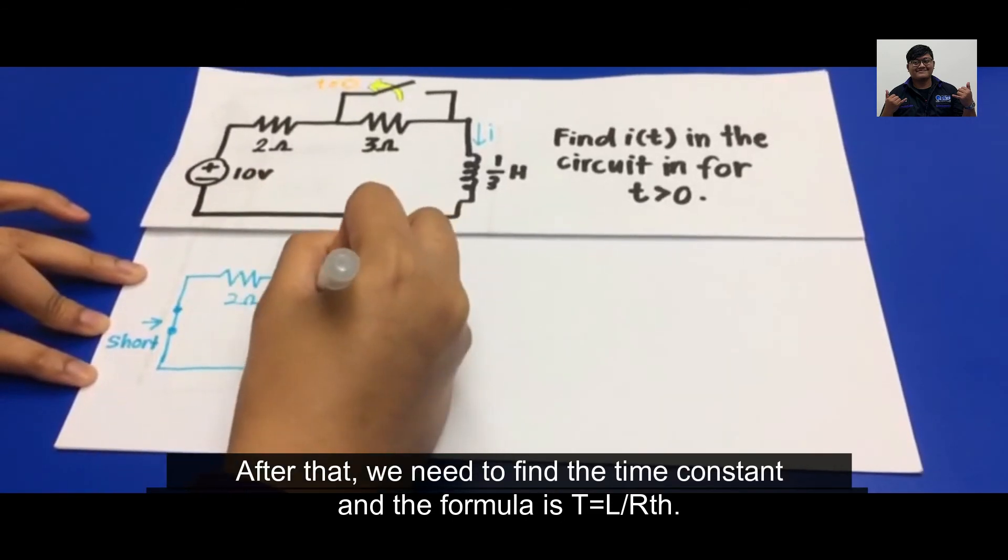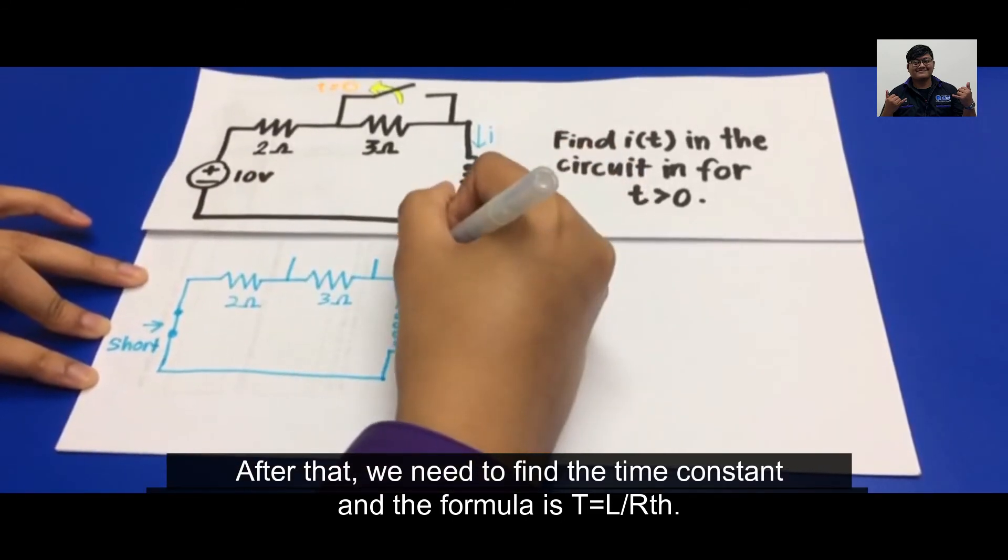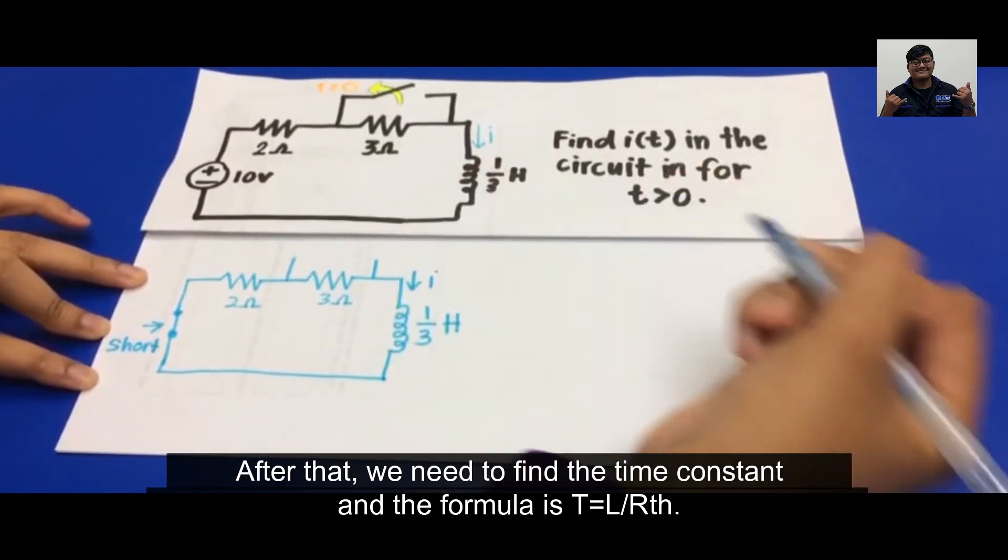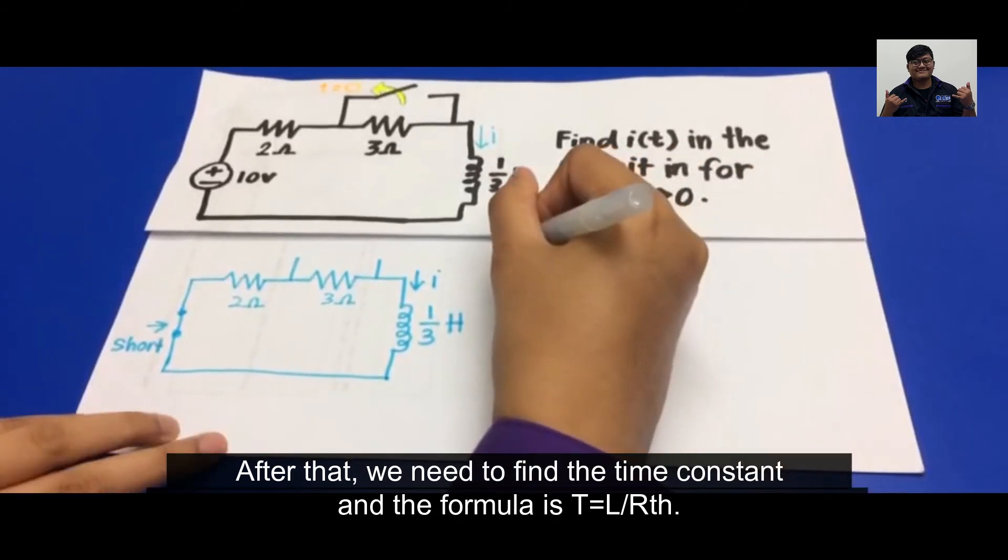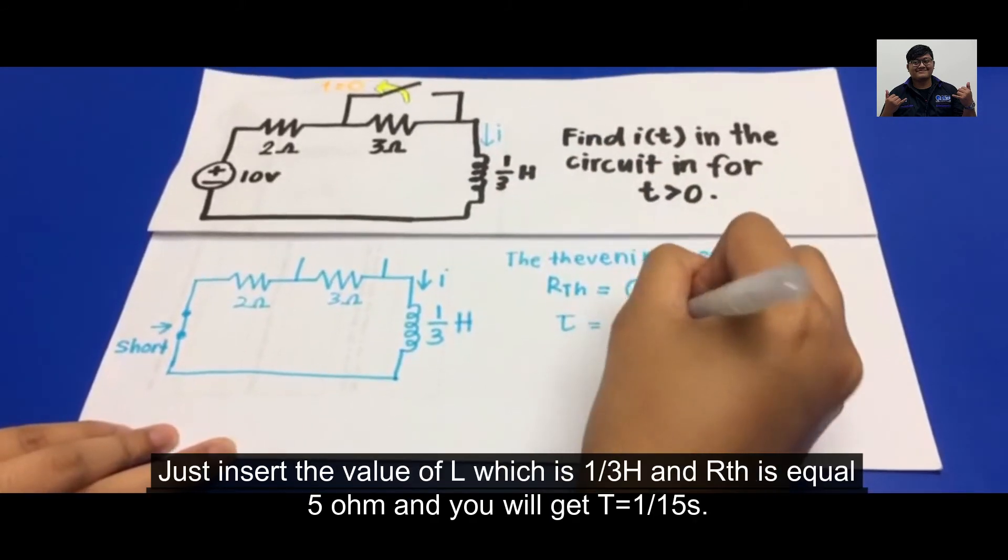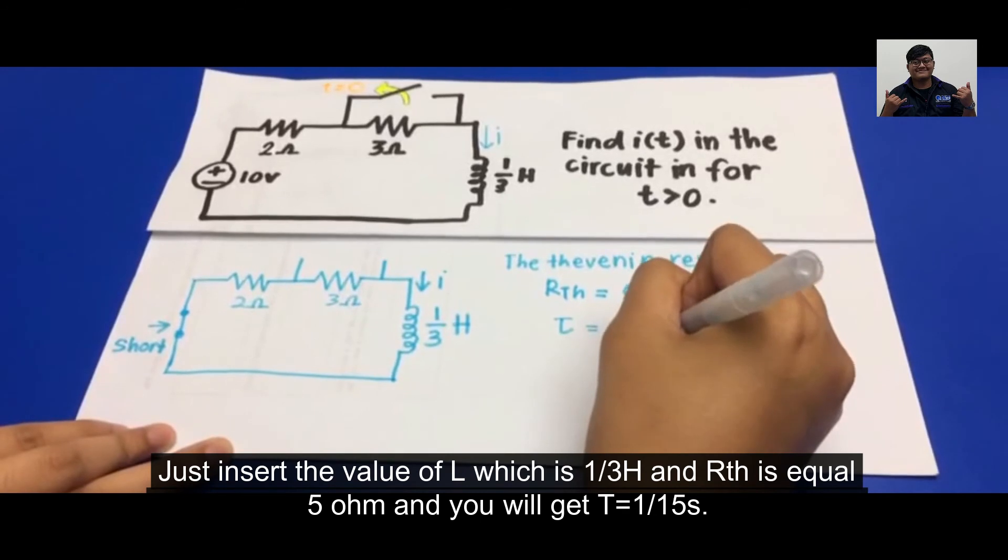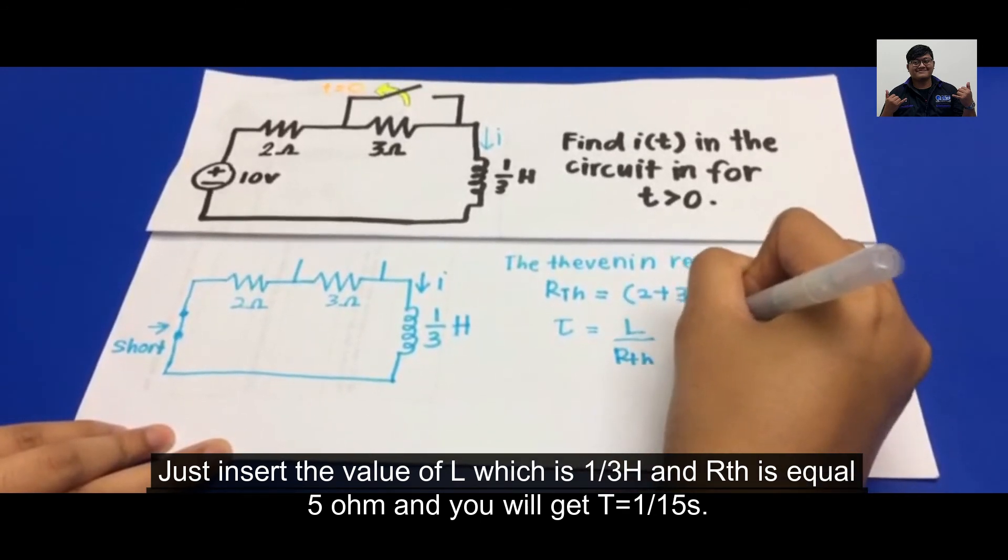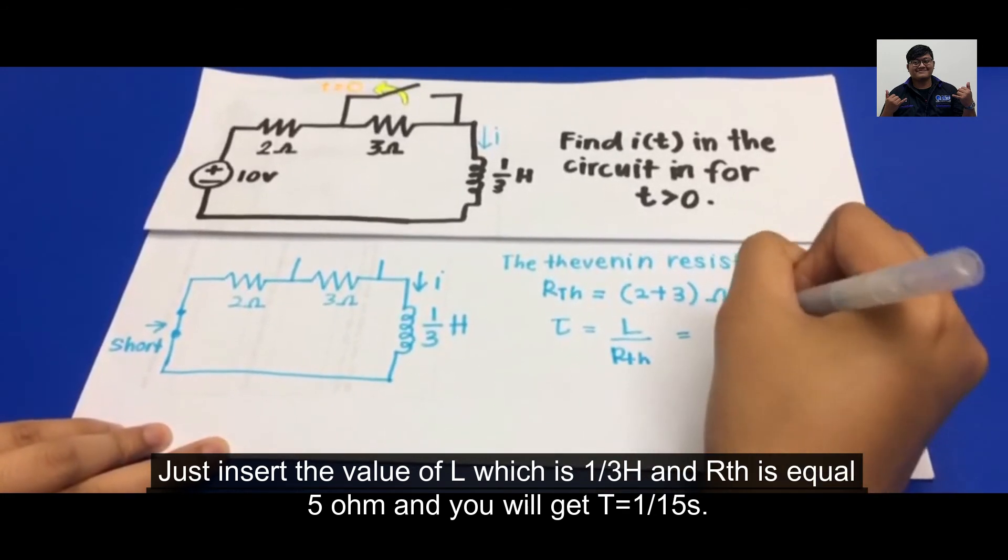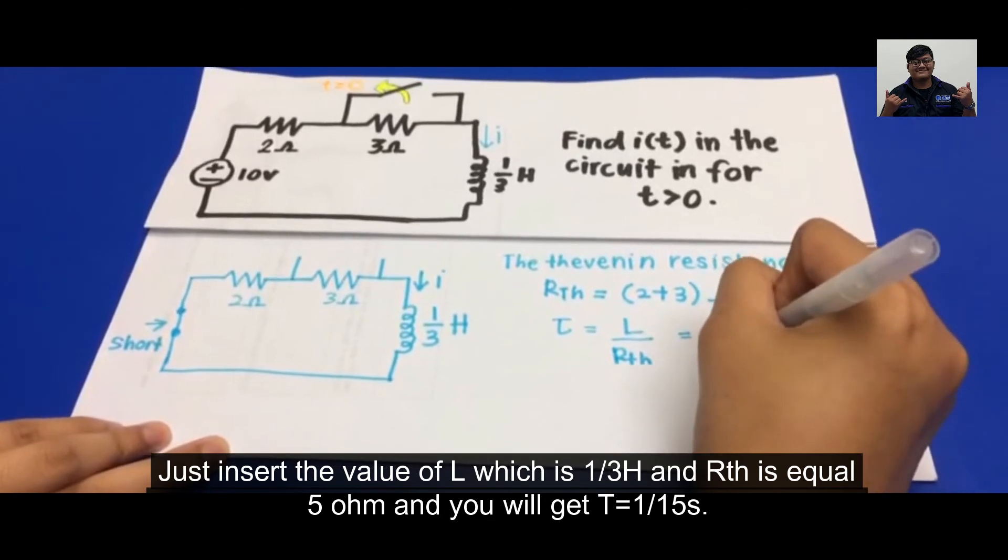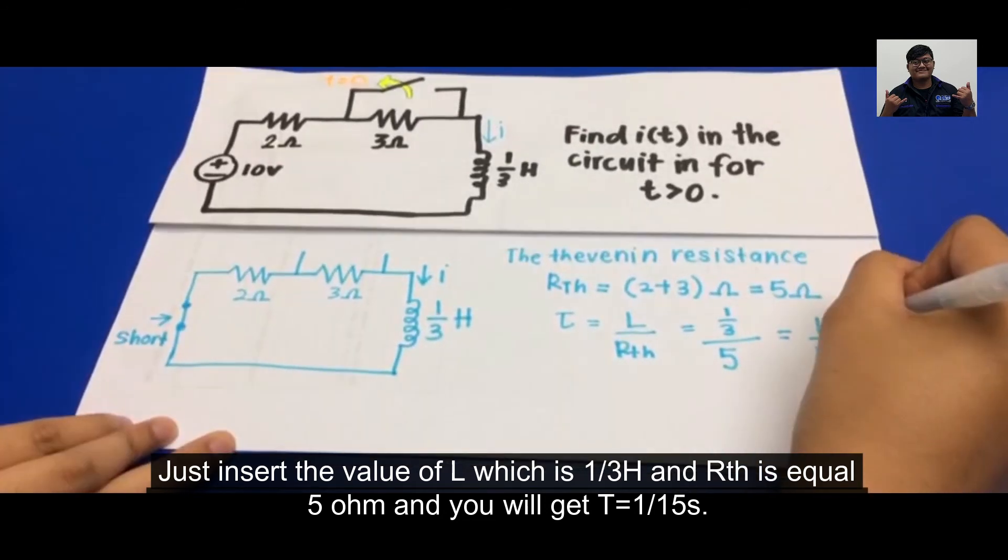After that, we need to find the time constant, which is Tau, and the formula is Tau equals L over RTH. Just insert the value of L, which is 1 over 3 Henry, and RTH is equal to 5 ohms. And you will get Tau is equal to 1 over 15 seconds.